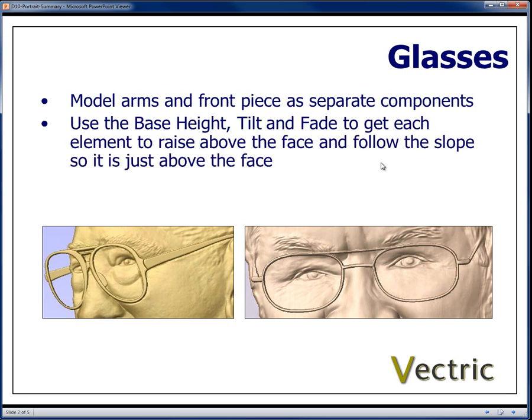Once you have those three components, you can use the component properties menu to change the base height, the tilt and the fade to basically get those to sit just above the level of the face, following any slope or gradient there is. We don't want steep vertical edges because they won't look good and they won't machine well.